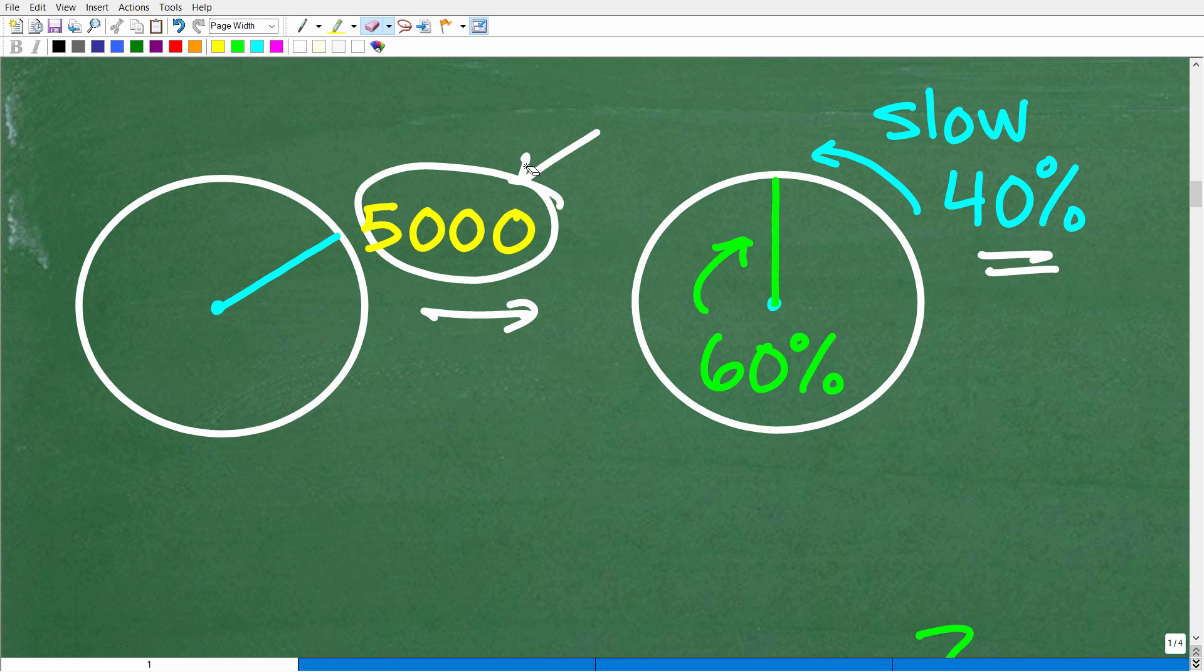So, there's a couple different ways we can approach this problem, right? So, we're going to slow down 40% of what? Well, 40% of 5,000. We need to figure out what the new speed is. So, we can do this one of two ways. We can figure out what 40% of 5,000 is and then subtract that away from 5,000 to get this current speed.